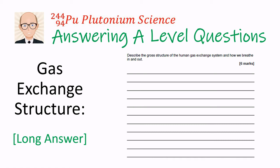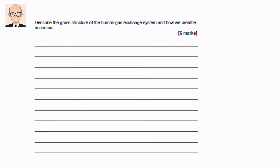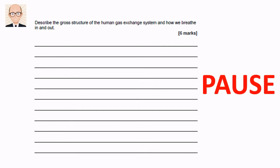Hi, I'm going to show you how to answer an A-level biology question on the structure of the human gas exchange system. This question asks us for the gross structure of the human gas exchange system and how we breathe in and out. This question is in two parts then: the first is to describe the breathing structures, and the second is to describe the breathing process.